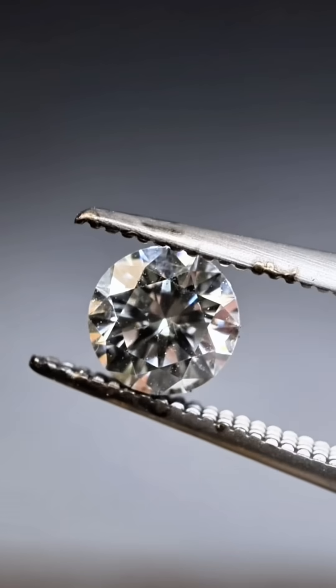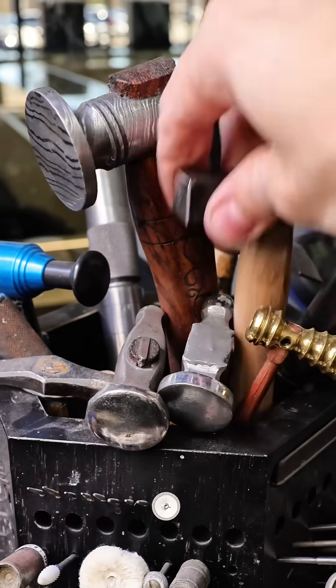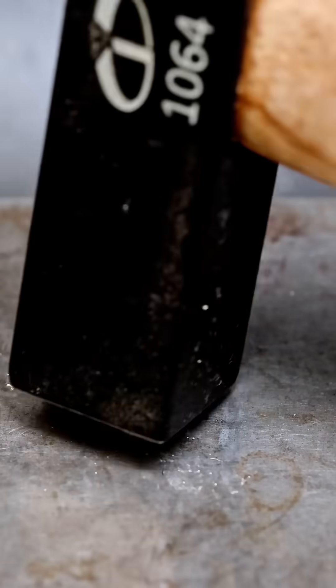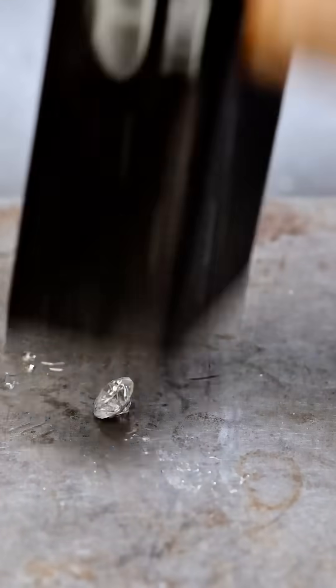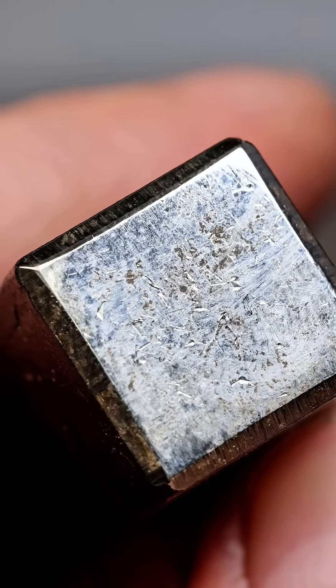And something I've always wanted to do is break one with a hammer. This hammer is made of hardened steel, and it's not doing anything to break the diamond. It's just marking up my hammer.